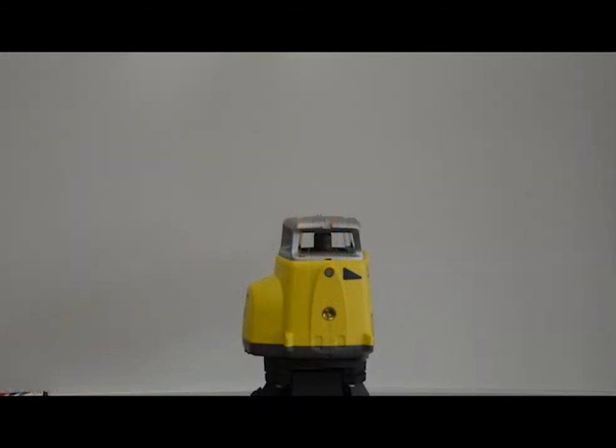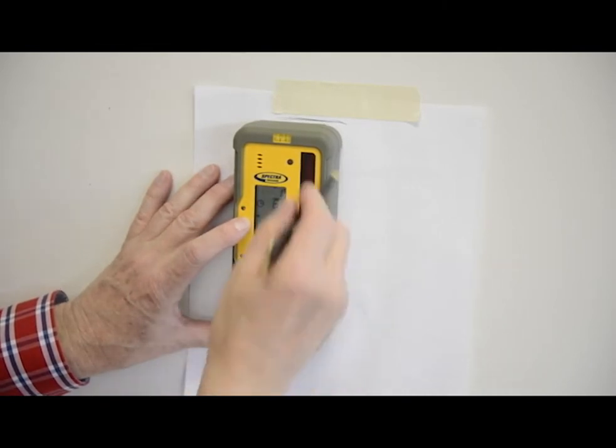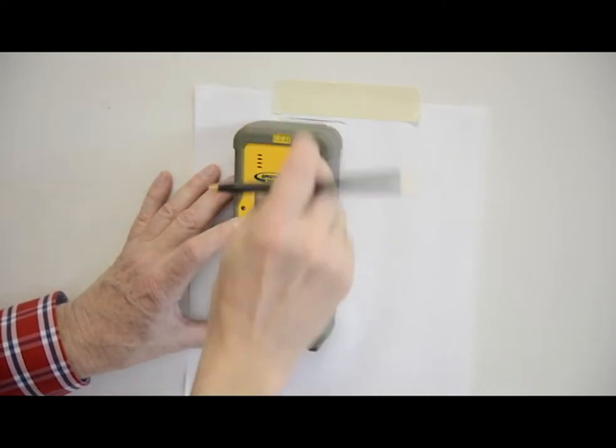Rotate the laser 180 degrees minus Y axis toward the wall and allow it to re-level. Raise or lower the receiver until you get an on-grade reading for the minus Y axis and make a second mark on the wall.